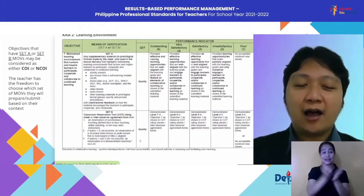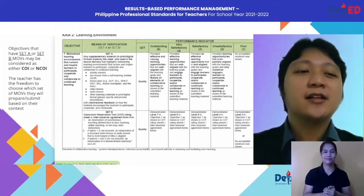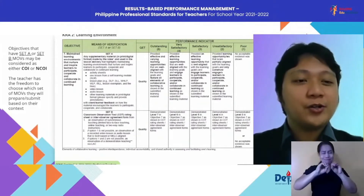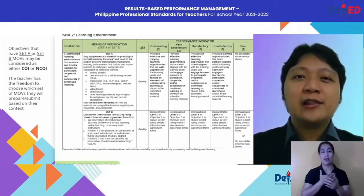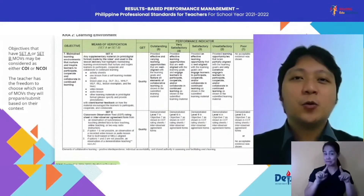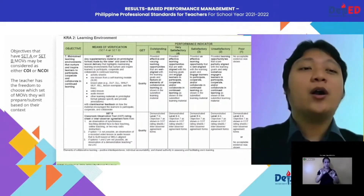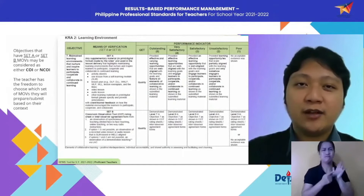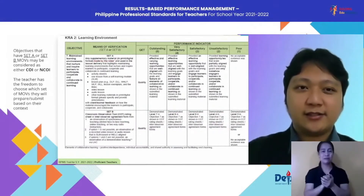These are objectives that have Set A or Set B, depending on your context. The teacher has the freedom to choose which set of MOVs to prepare or submit based on their context. You will not do both. Based on your context — whichever is more possible for you — you choose either Set A or Set B. If you feel you can reflect the objective through Classroom Observation, you can choose Set A; the same applies for Objectives 8, 9, and 10.